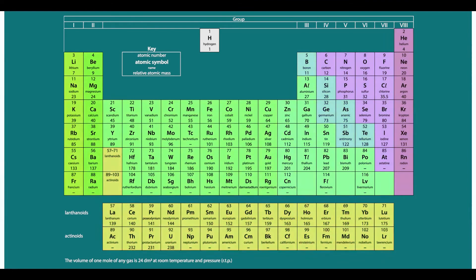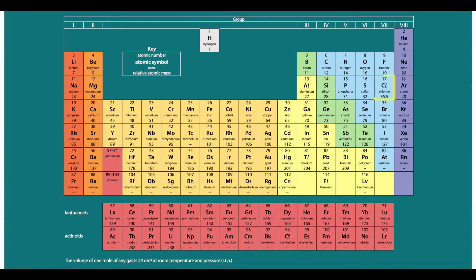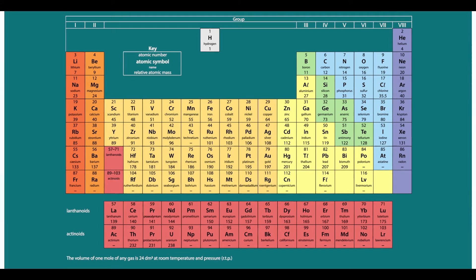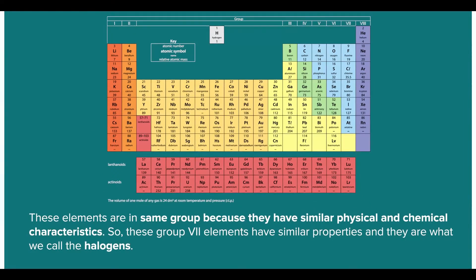The elements are grouped according to similar properties. For example, chlorine, bromine, and iodine are in the same group. It is important to note that these elements are in the same group because they have similar physical and chemical characteristics. These group seven elements have similar properties, and they are what we call halogens. We will study more about halogens in a later lesson.